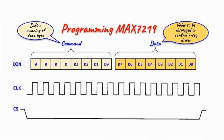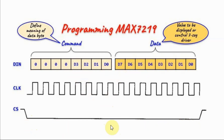The MAX7219 is programmed by the Arduino by sending two bytes: first the command byte, and then the data byte. These two bytes are sent over the data in pin of the MAX7219. The command byte determines whether the data byte is a value to be displayed on the 7-segment display, or a control byte that will control the functionality of the IC. Before sending these two bytes, the Arduino sends a low pulse to the chip select pin to enable the MAX7219, and the clock signal is sent along the clock line.